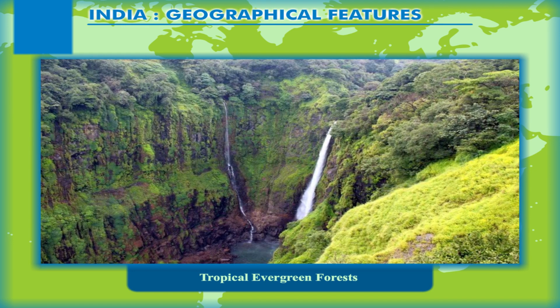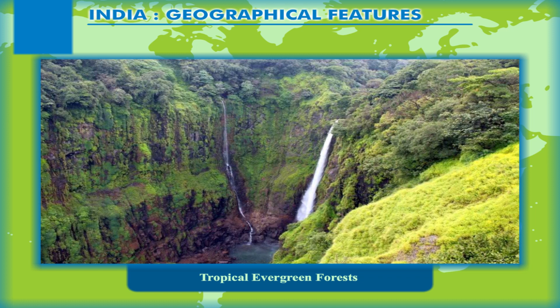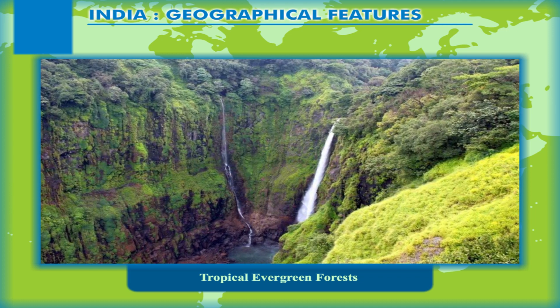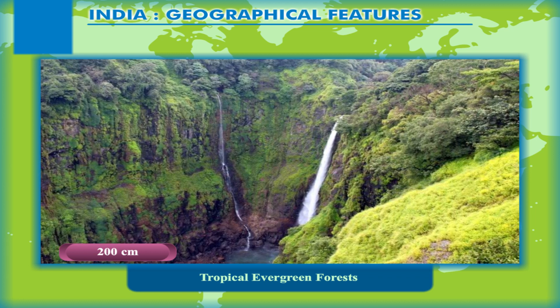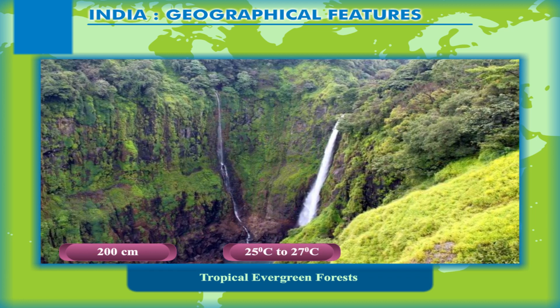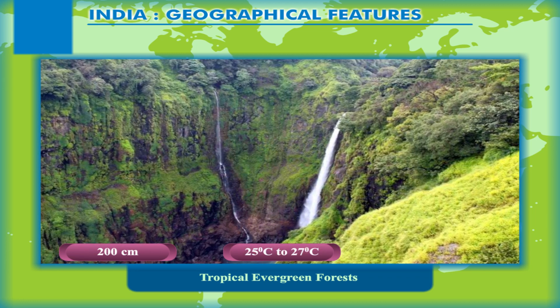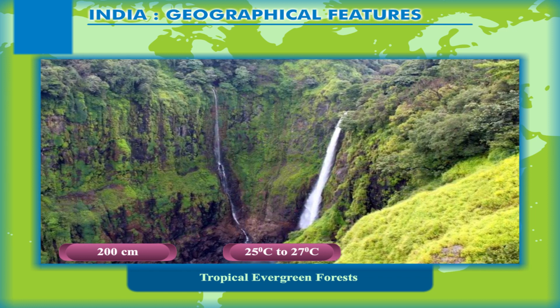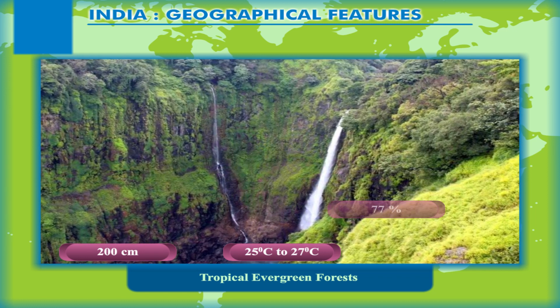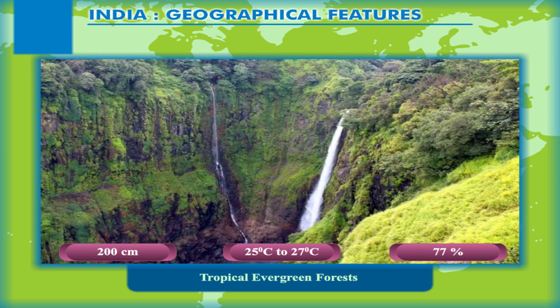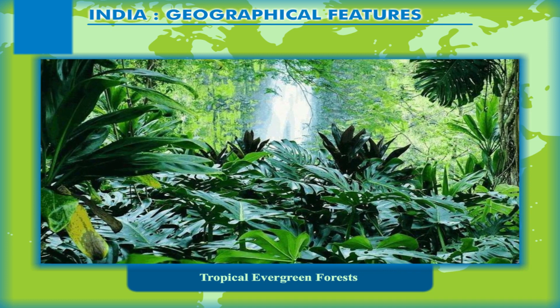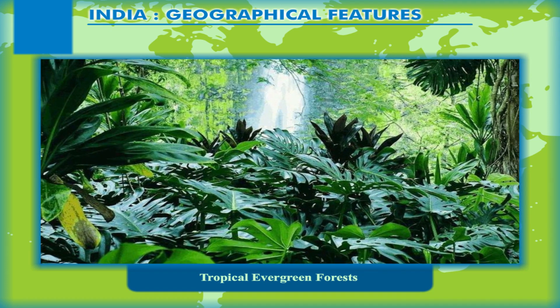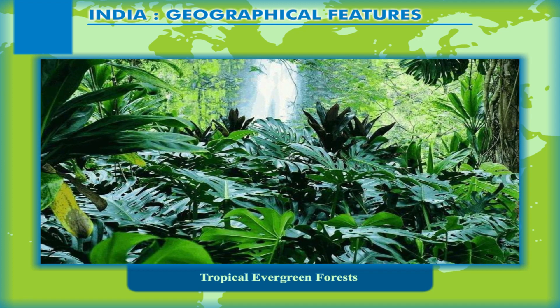Tropical Evergreen Forests. These forests grow in areas of rainfall more than 200 cm and the average temperature is around 25 to 27 degrees Celsius. These are areas where annual humidity is above 77%. The tropical evergreen forests have evergreen trees that do not have a fixed season to shed their leaves.